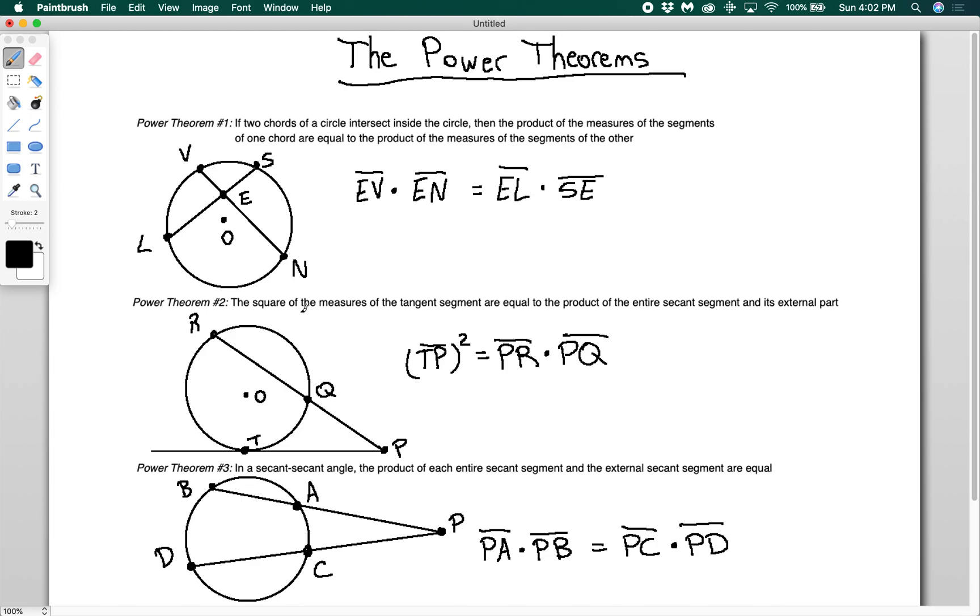Power theorem 2: The square of the measures of the tangent segment are equal to the product of the entire secant segment and its external part. Here's what that means. I have a tangent segment PT. You can see it is tangent to the circle.